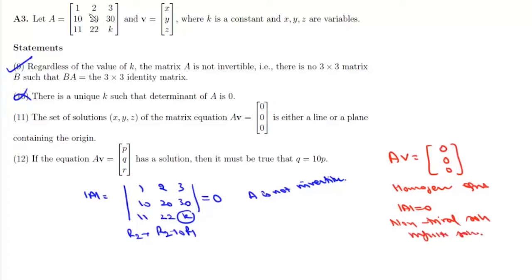Looking at these three equations: x + 2y + 3z = 0, 10x + 20y + 30z = 0, and 11x + 22y + kz = 0. If k is 33, then all three equations represent the same equation, which is the equation of a plane.